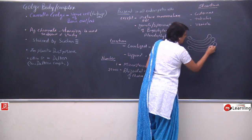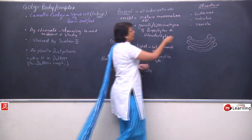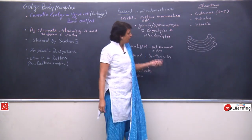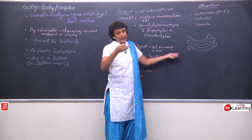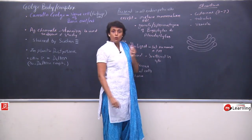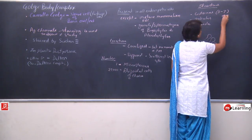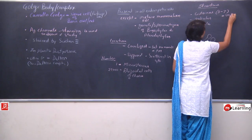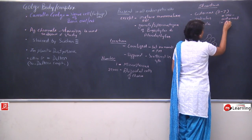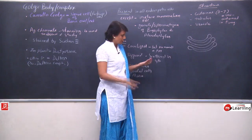The number of cisternae per Golgi complex is about 3 to 7. Here we have drawn 3, but they can be 4, 5, 6, or 7. Unicisternal Golgi — meaning only one cisterna — has been reported in fungi. This is a very special case where there is only one cisterna.